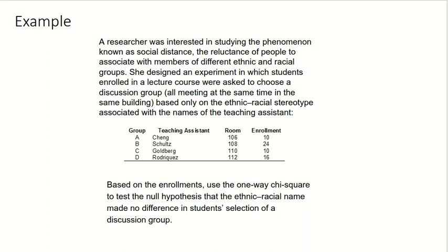Here's an example. A researcher was interested in studying the phenomenon known as social distance, the reluctance of people to associate with members of different ethnic and racial groups. She designed an experiment in which students enrolled in a lecture course were asked to choose a discussion group, all meeting at the same time in the same building, based only on the ethnic-racial stereotype associated with the names of the teaching assistants.